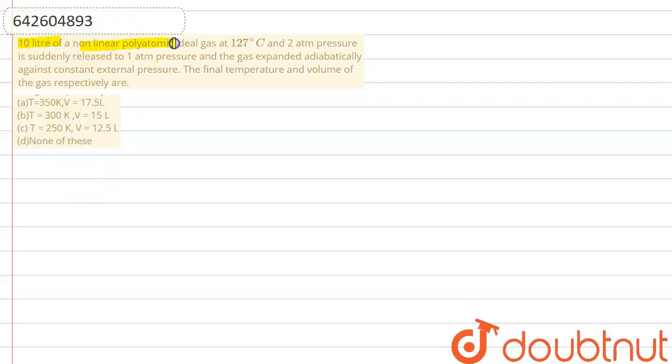10 litre of non-linear polyatomic ideal gas at 127 degrees Celsius and 2 atmospheric pressure is suddenly released to 1 atmospheric pressure and the gas expanded adiabatically against constant external pressure. The final temperature and volume of the gas respectively are...